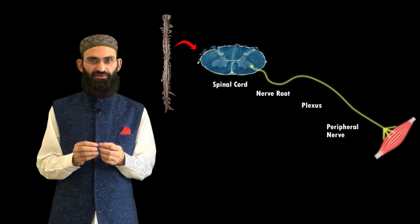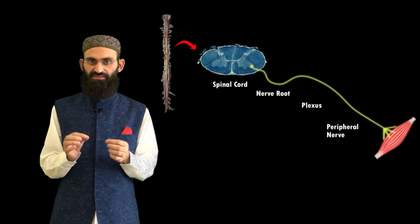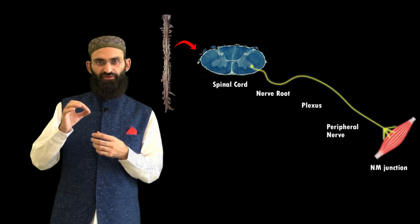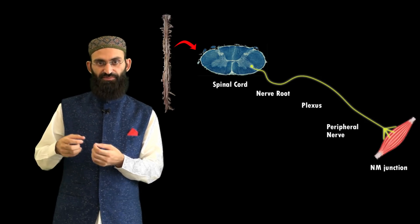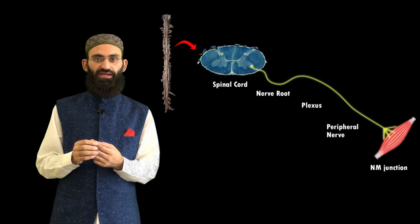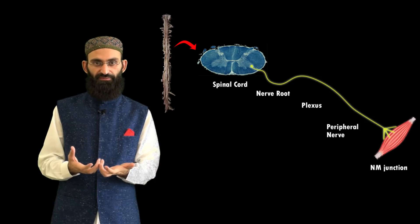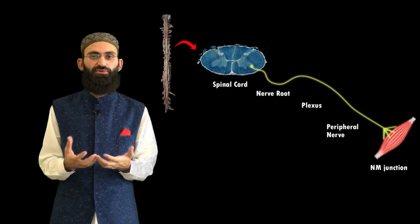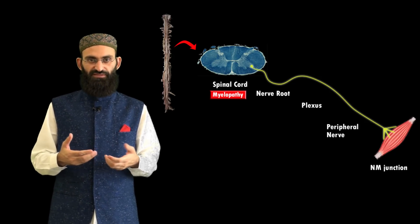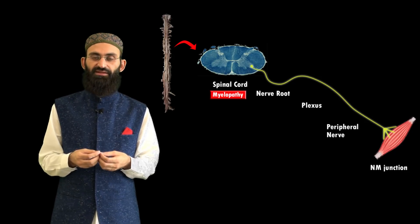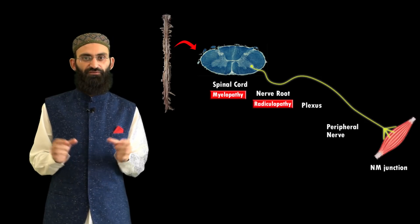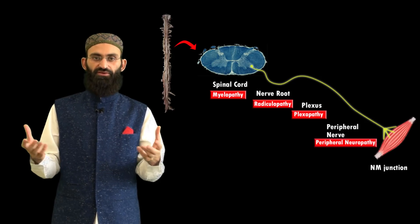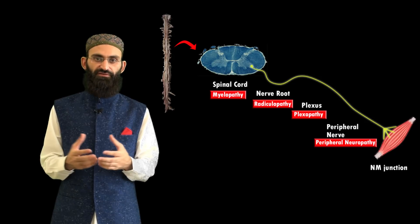Nerve fibers in peripheral nerves innervate skeletal muscles through the neuromuscular junction. Damage to lower motor neurons — from their origin at the spinal cord all the way to the distal end of the axons — leads to lower motor neuron type weakness. The different categories include: myelopathy (disease of the spinal cord at the anterior horn cell level), radiculopathy (disease of nerve roots), plexopathy (lesion at the plexus level), and neuropathy or peripheral neuropathy (lesion at the peripheral nerve level).